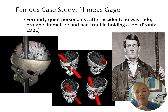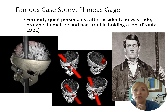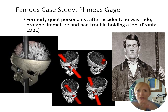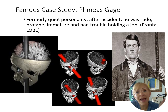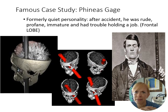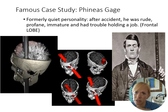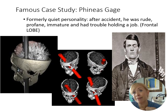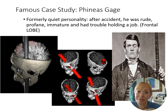Phineas Gage had an accident that damaged his frontal lobe. Think of the frontal lobe as your 'smart parts' — your executive functioning. Before the accident, Phineas was nice, responsible, and kind. After the accident, he was rude, irresponsible, and couldn't maintain his work. The frontal lobe is essential — you've got to take care of it.